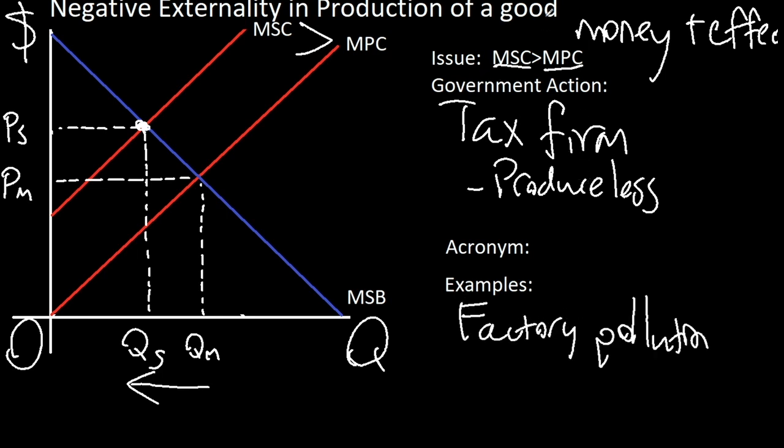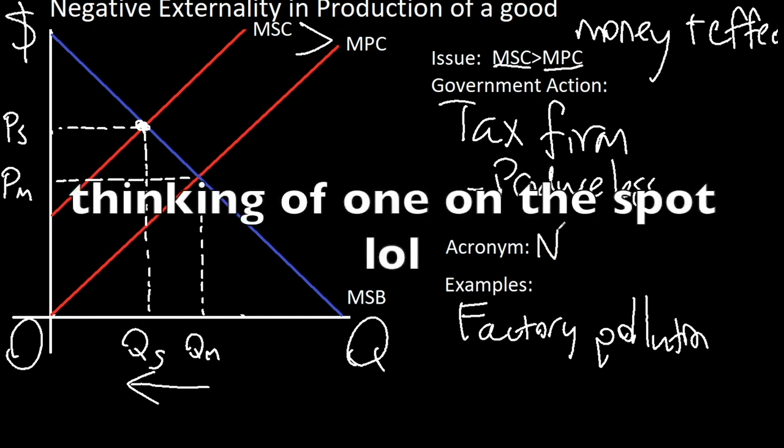Really any firm that has spillover costs during production will fall under this category. And an acronym is just NEPS.